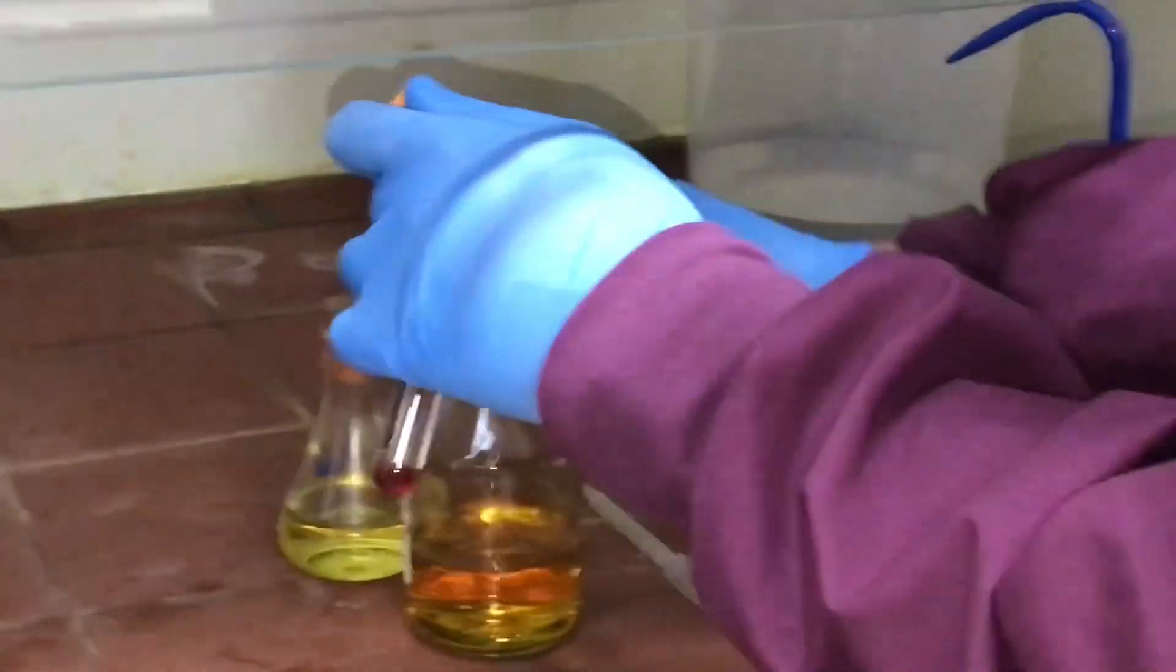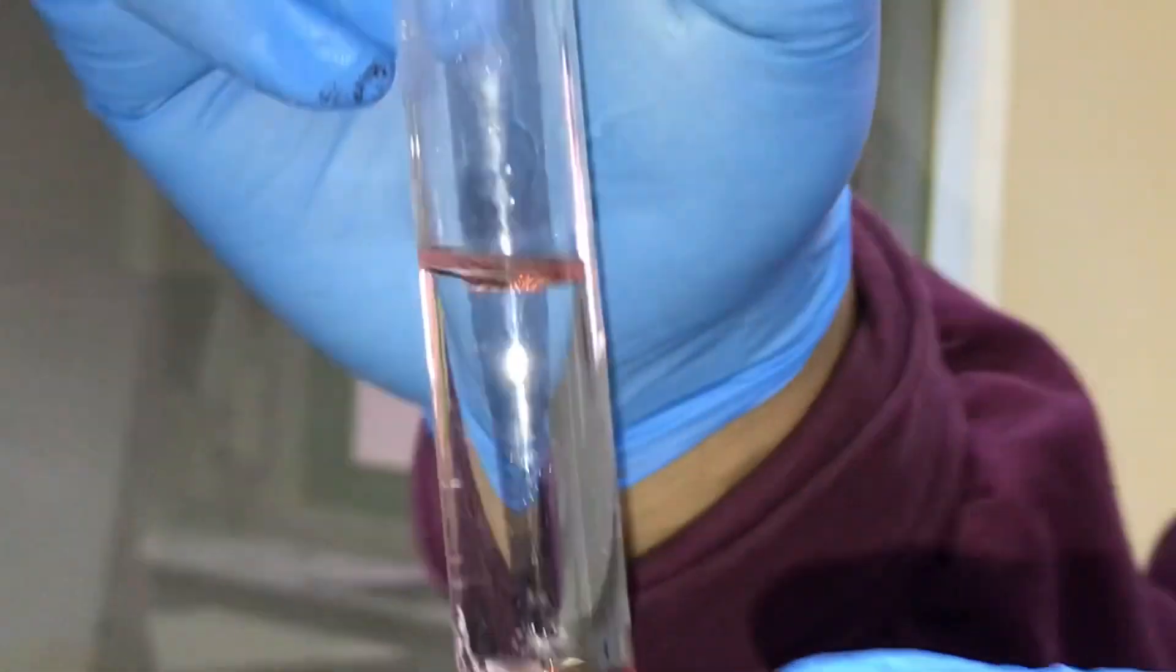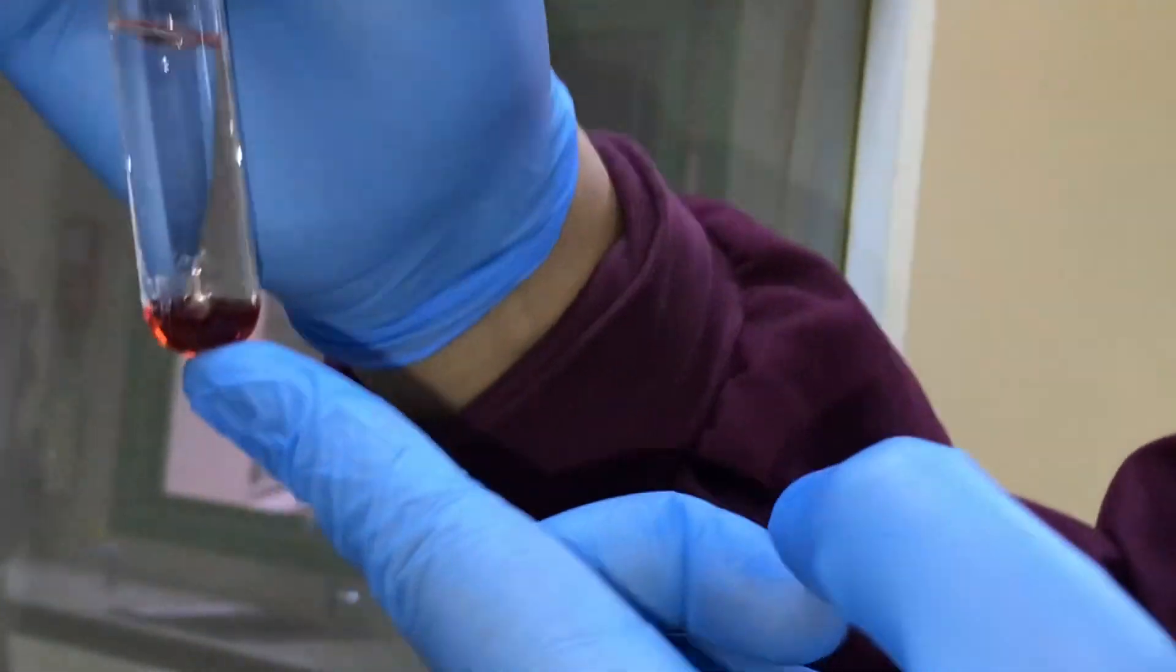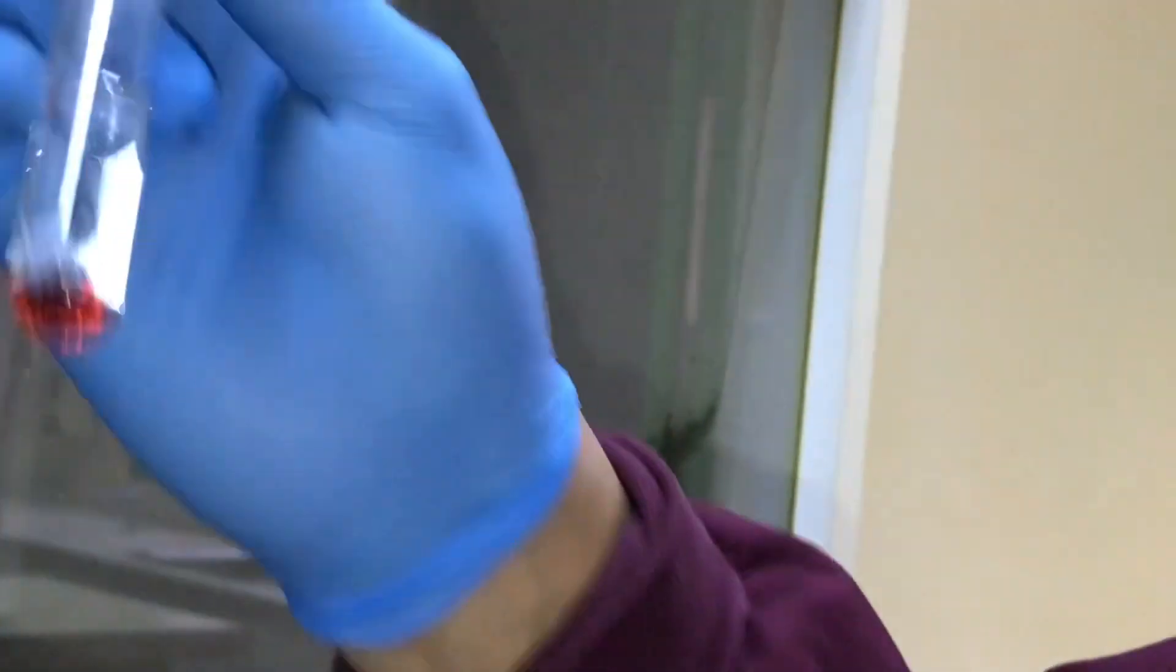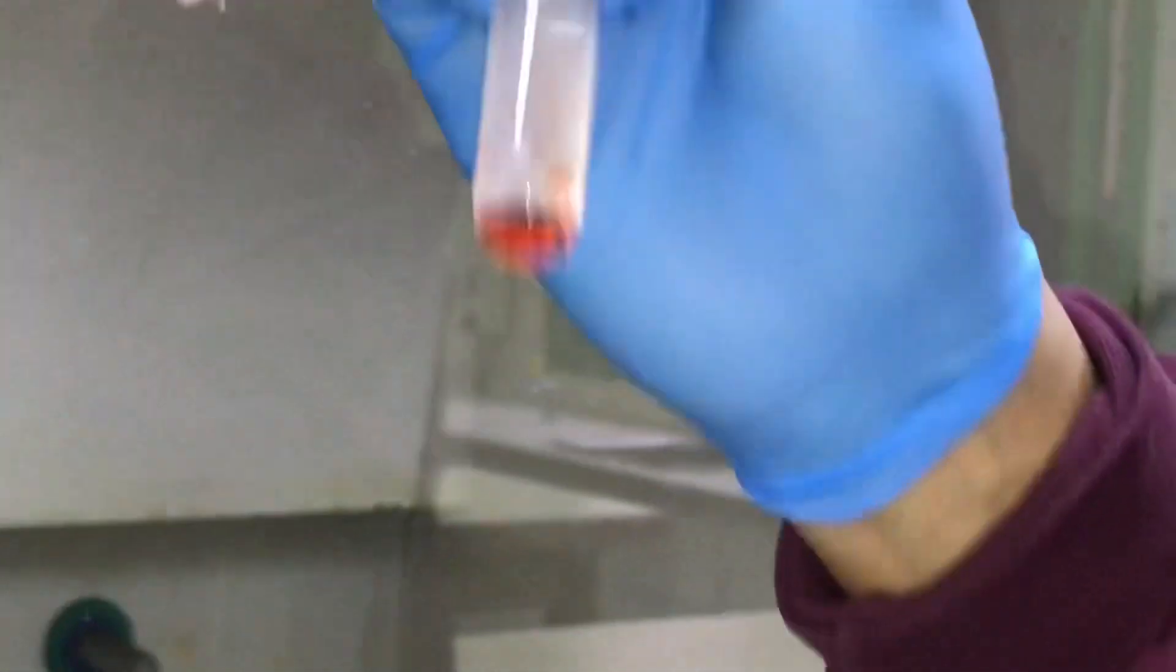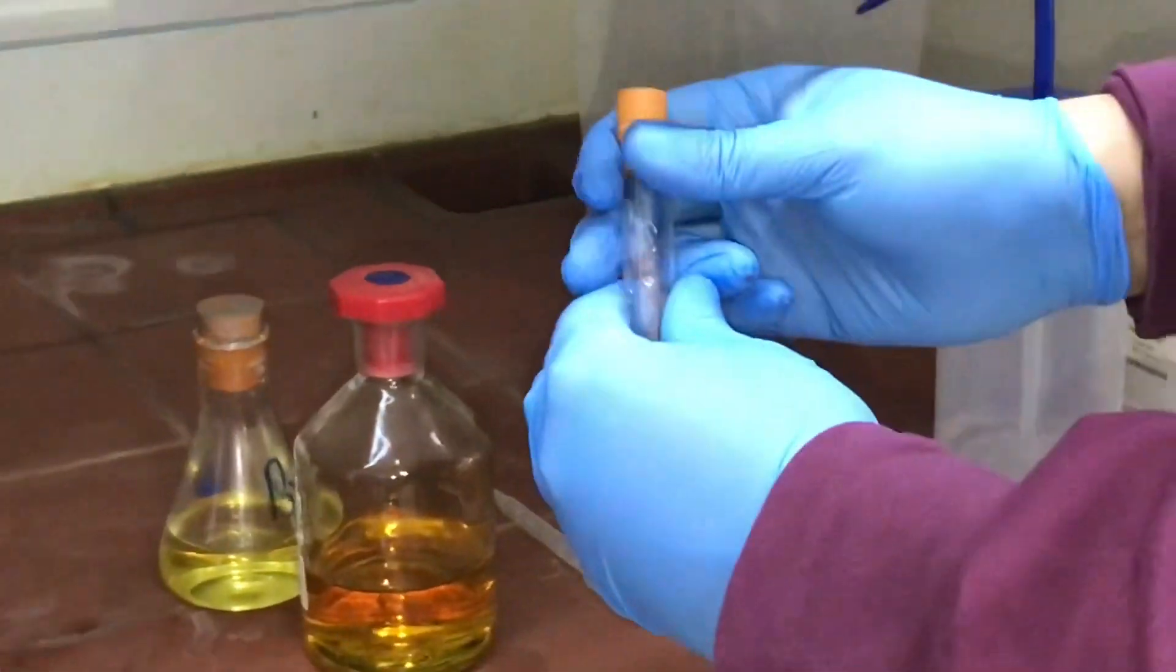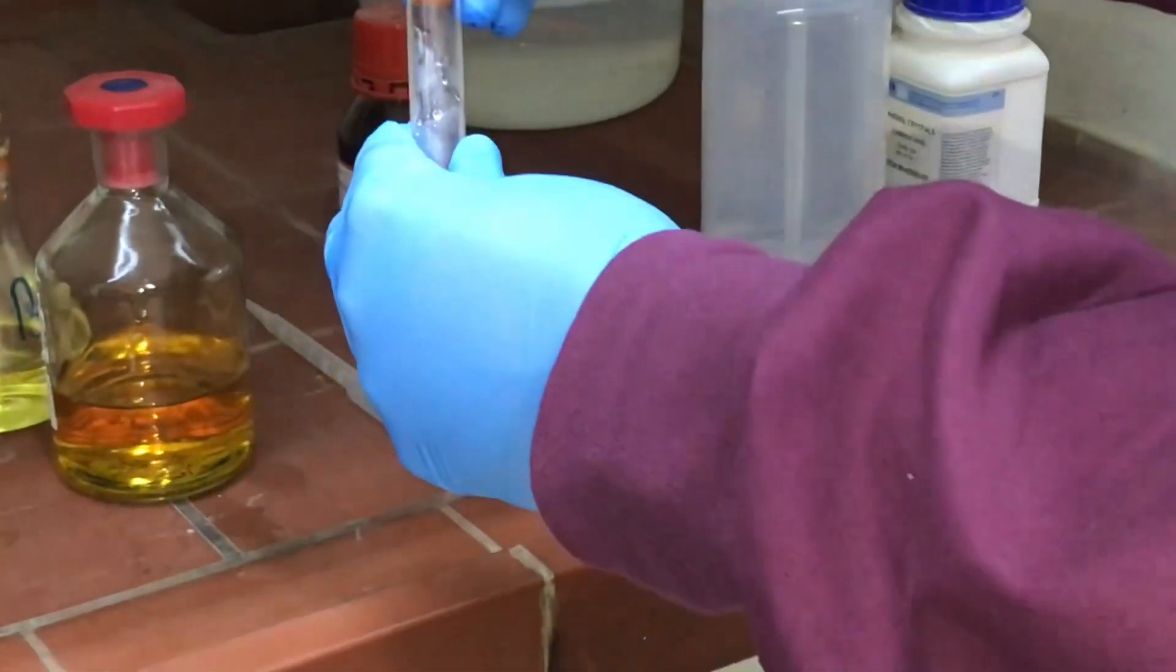You can see the top layer is definitely the bromine—there's more of that layer than the phenol at the bottom. What I'm going to do now is give it a little shake to try and mix it up to give a chance for the phenol to react.